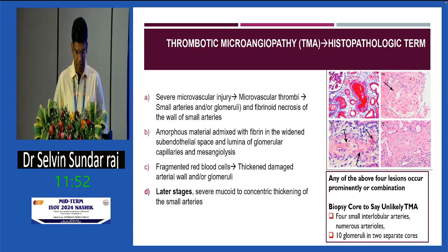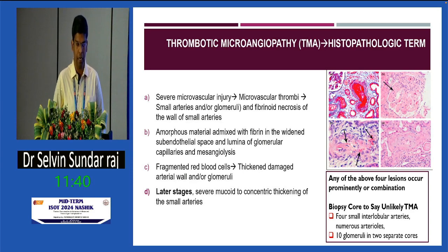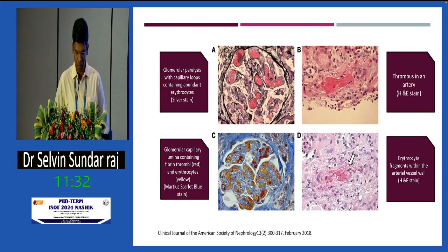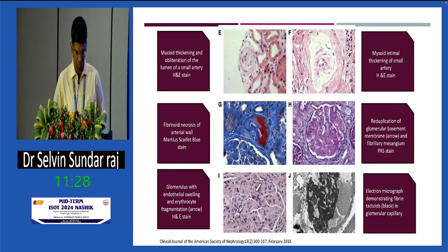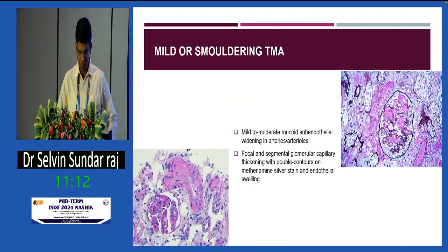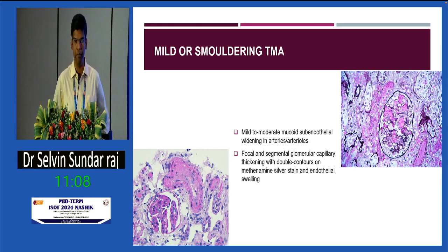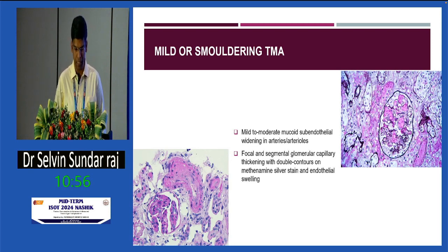What do we see in TMA? There is microvascular thrombi and fibrinoid necrosis. Fibrin can be seen in the subendothelial space and lumina of glomerular capillaries, along with mesangiolysis and fragmented RBCs. In later stages, it can lead to concentric thickening of small arteries. Histopathological features include fibrin thrombus, obliteration of the lumen of small renal arteries, endothelial swelling, and fragmented RBCs. In later stages there can be GBM reduplication, and on EM, fibrin tactoids can be seen. It is important not to miss mild or small ring TMA, including mild to moderate subendothelial widening. Features of chronic TMA include double contours in glomerular capillary membranes.